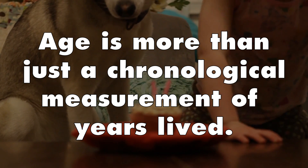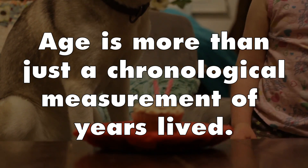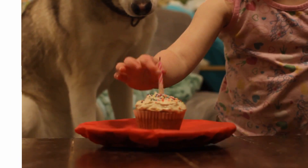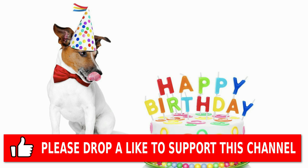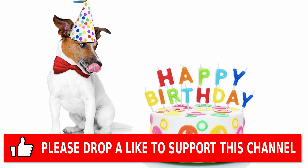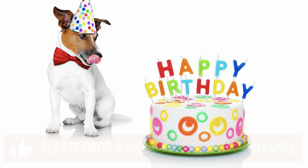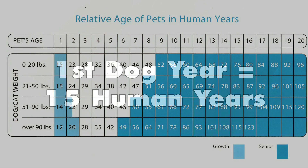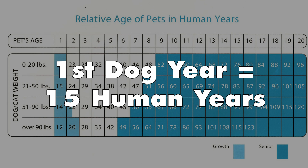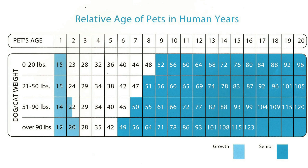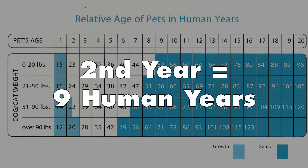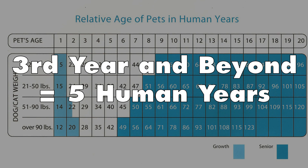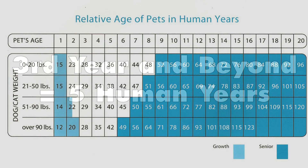Age is more than just a chronological measure of years lived — it's also an expression of how our bodies have been affected by the passage of time. As a general guideline, the American Veterinary Medical Association breaks down a dog's age comparison like this: 15 human years equals the first year of a medium-sized dog's life; year 2 for a dog equals about 9 years for a human; and after that, each human year would be approximately 5 years for a dog.